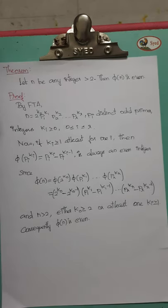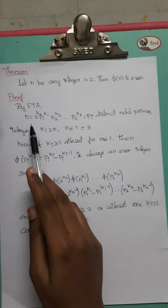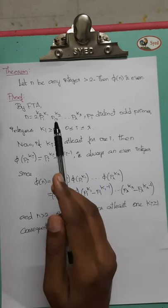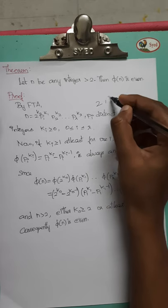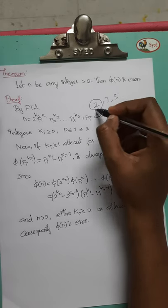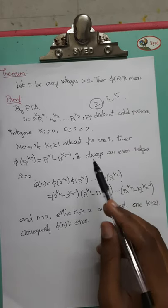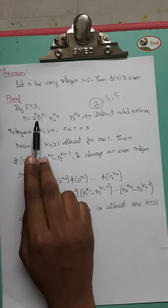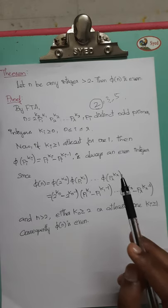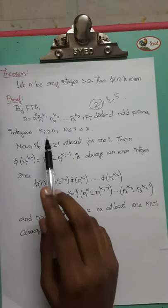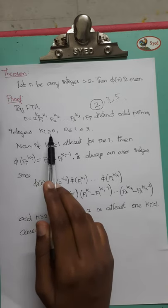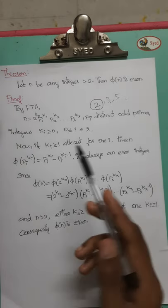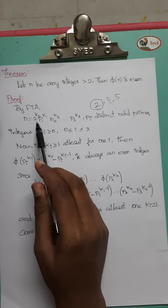Let's prove that if you have an integer, we can express the distinct primes. In this case, we have prime numbers such as 2, 3, 5. Let's say k₀. If you have two multiples of 2, we consider k an integer greater than or equal to 0. If the power is equal to 0, then we have 2 prime numbers.